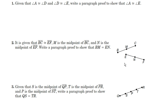M is the midpoint of BC, and N is the midpoint of EF. So that means BM is exactly one-half of BC, and EN is exactly one-half of EF.